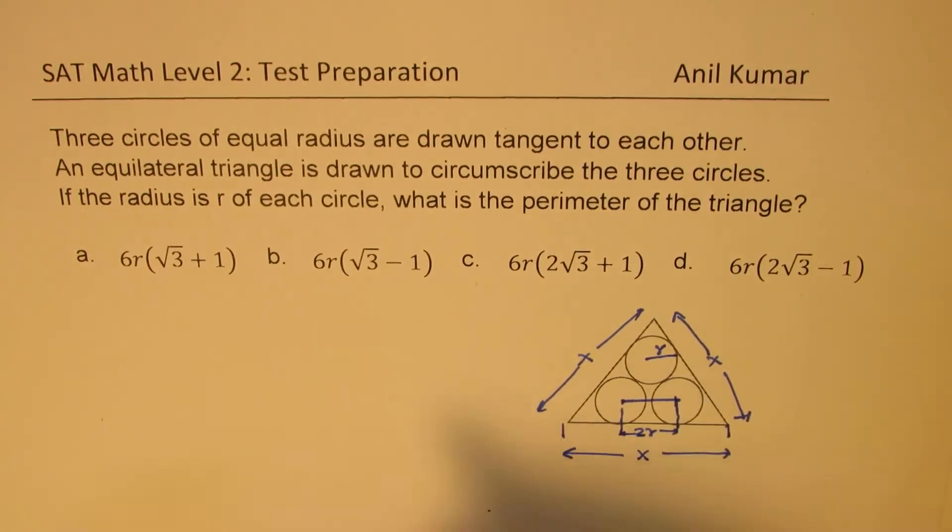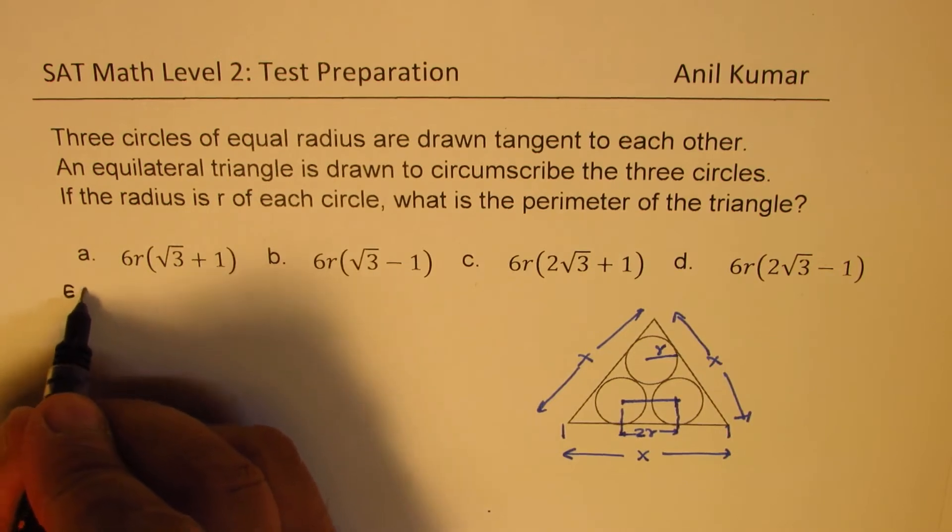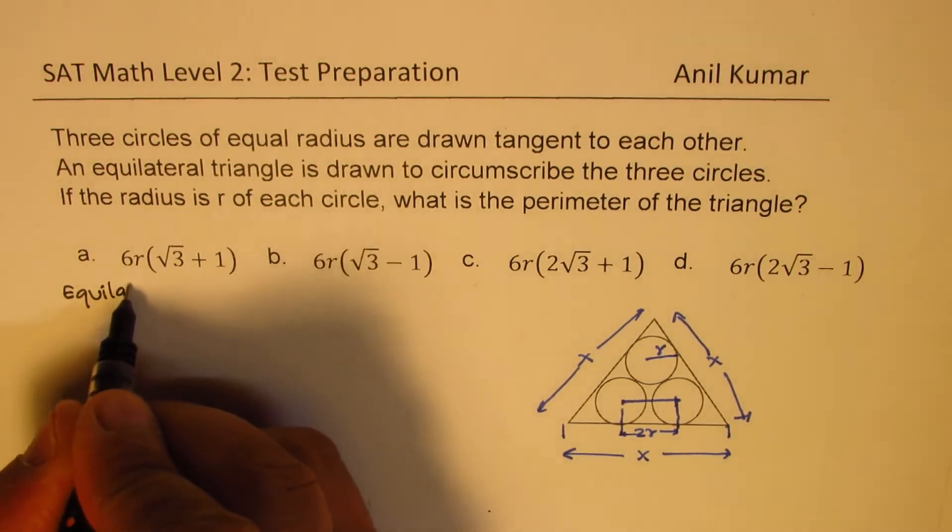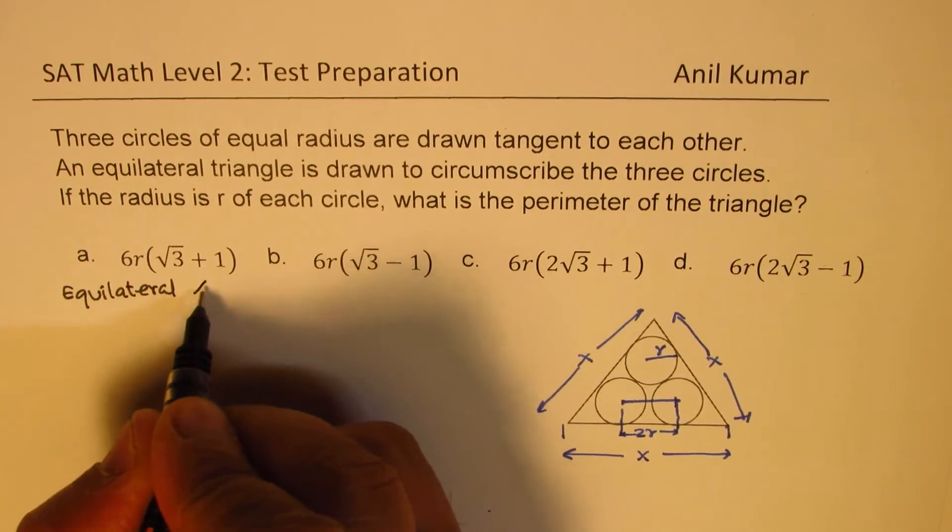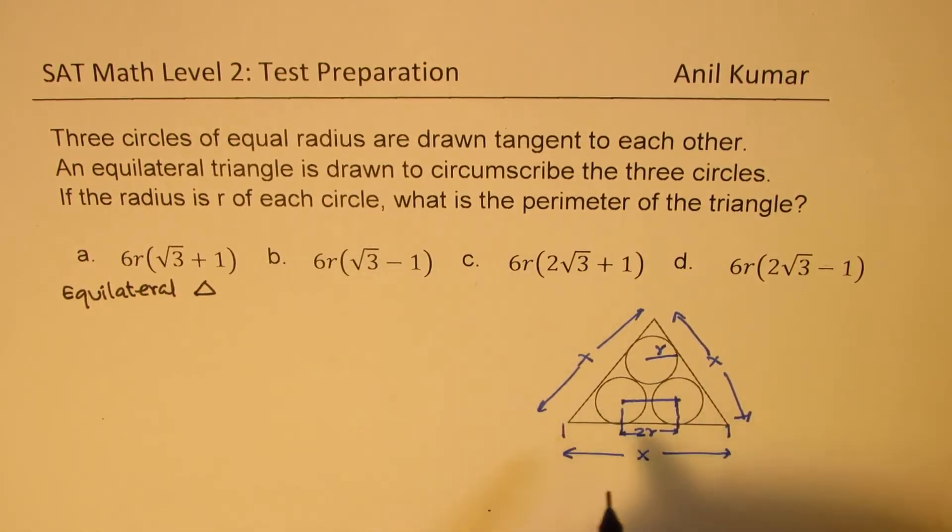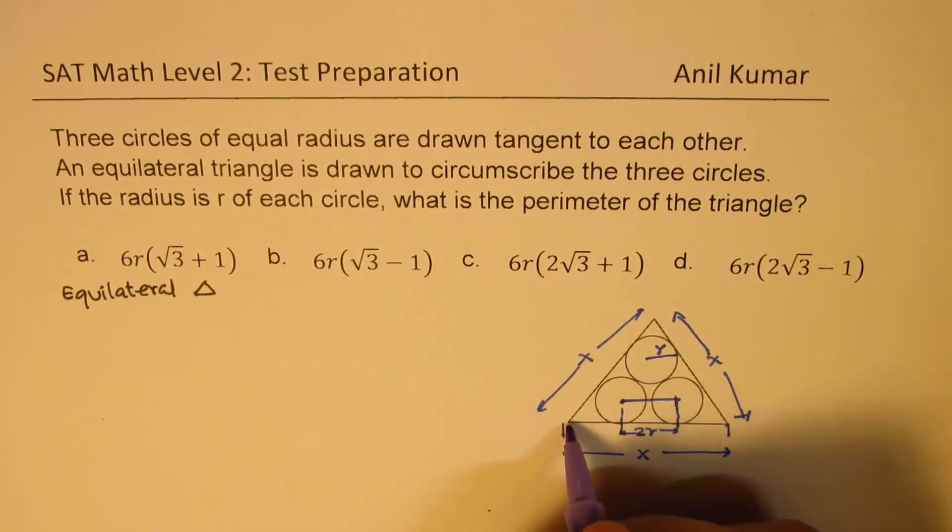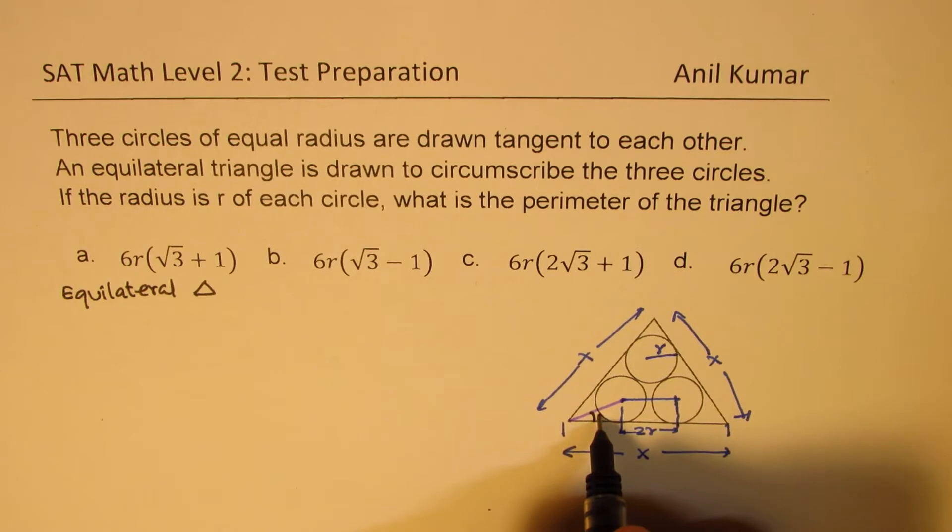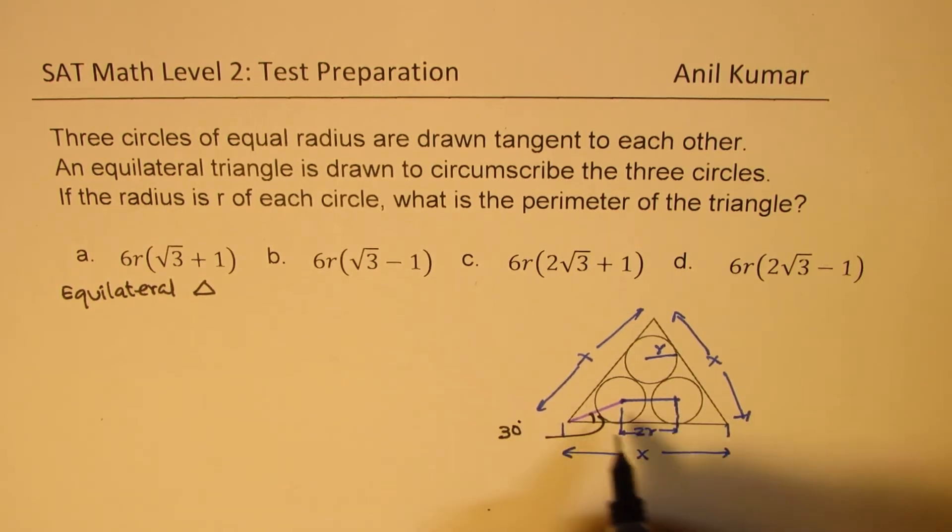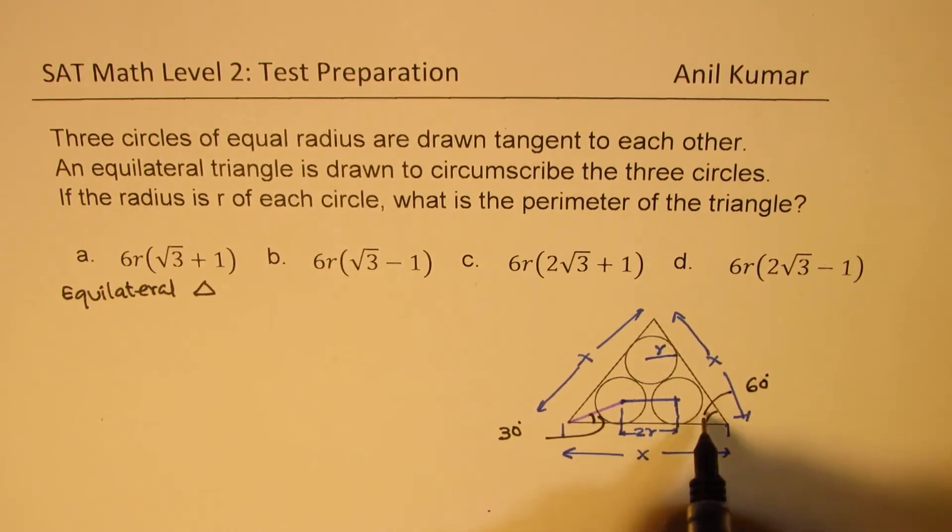Important thing to remember here is that we are working with equilateral triangle. So the angles are 60 degrees. So if I join the center of a circle in the corner with the center, what do you expect this angle to be? Clearly, this angle will be 30 degrees. Half of 60. Total is 60 degrees, so half of that from the symmetry is going to be 30 degrees.